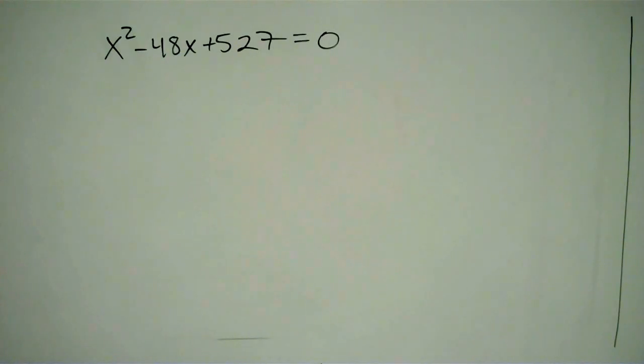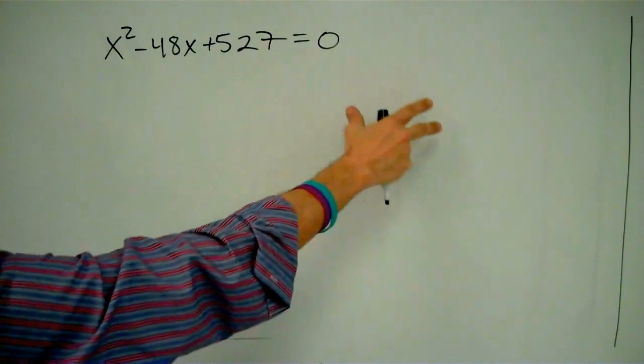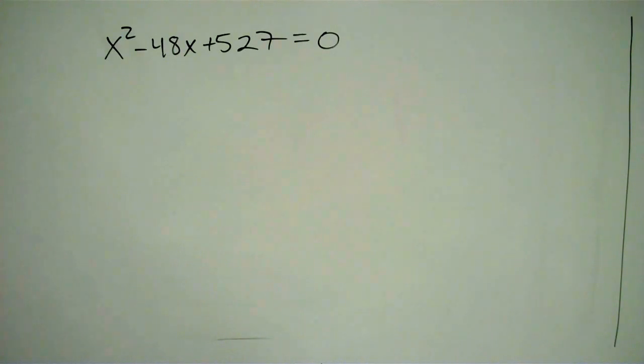It's called completing the square. Now what we want to do is we want to get something squared on this side of the equation equaling something squared on that side of the equation. So let's start off by looking at some patterns that we see of perfect squares.